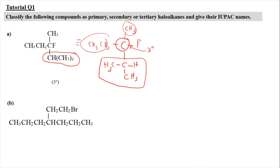Now we're going to do the IUPAC name. For doing the IUPAC name, it is almost similar to the one that we have learned in the chapter of alkyl. We need to find the longest carbon chain first — carbon chain yang paling panjang. So if I were to start from here, I will get one, two, three, four, and five carbons.